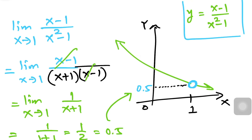I hope you notice the difference between a limit and simply finding the y-value when x is given. A limit tells us what's going on around a point — it does not care about what's happening at that point. It gives us the height or y-value as x is approaching one.